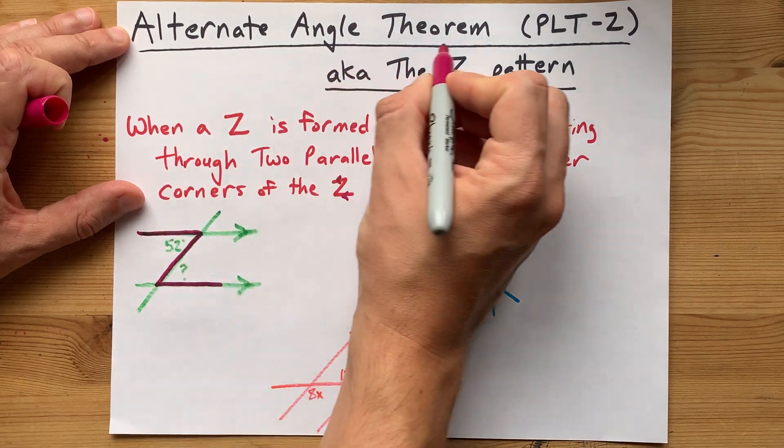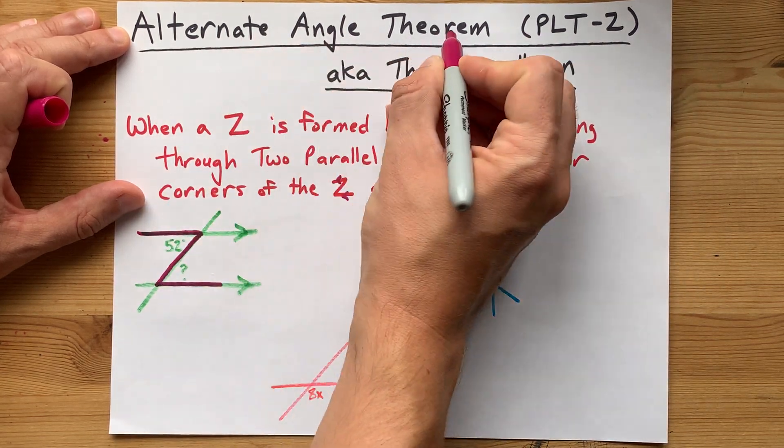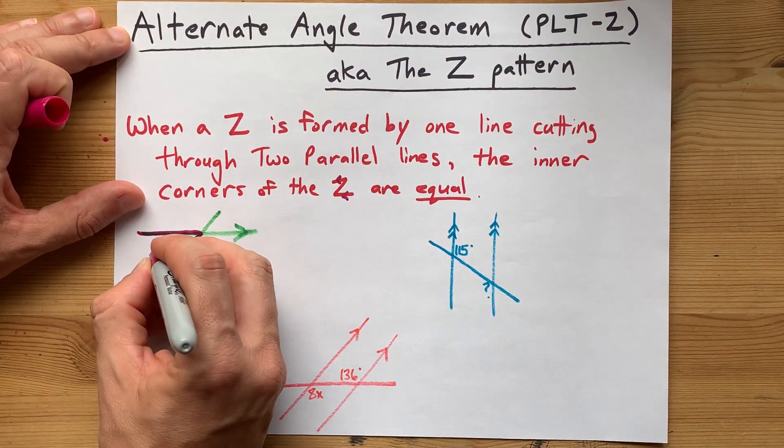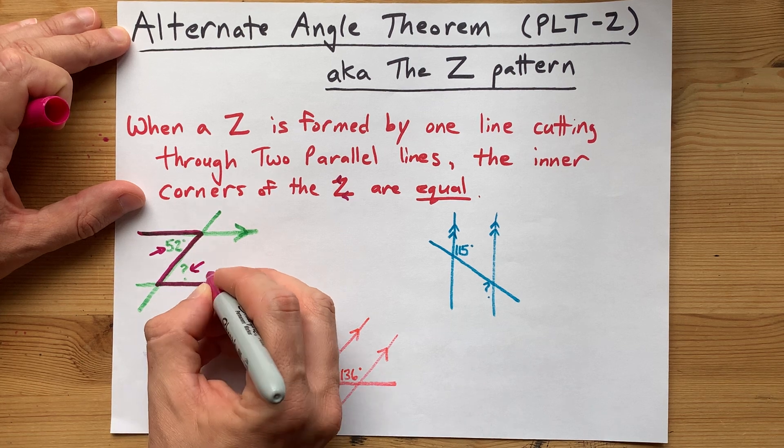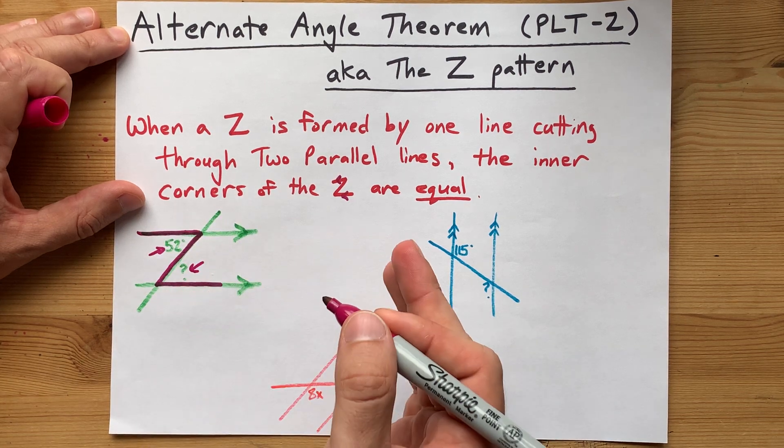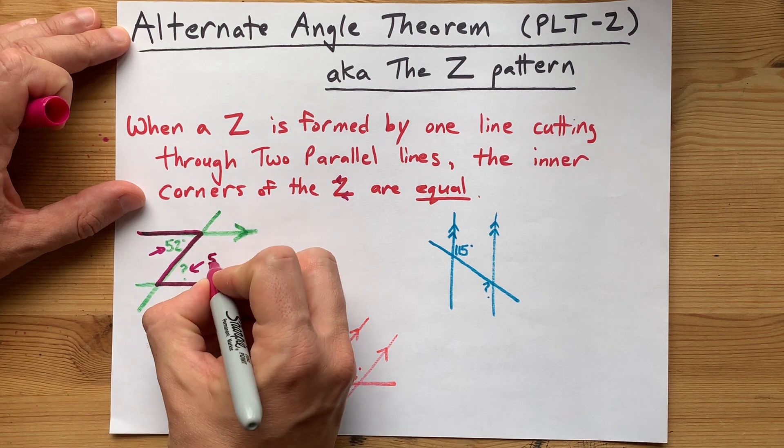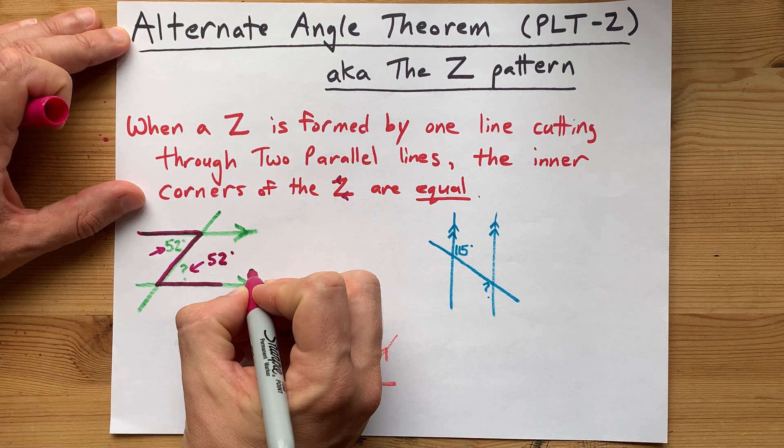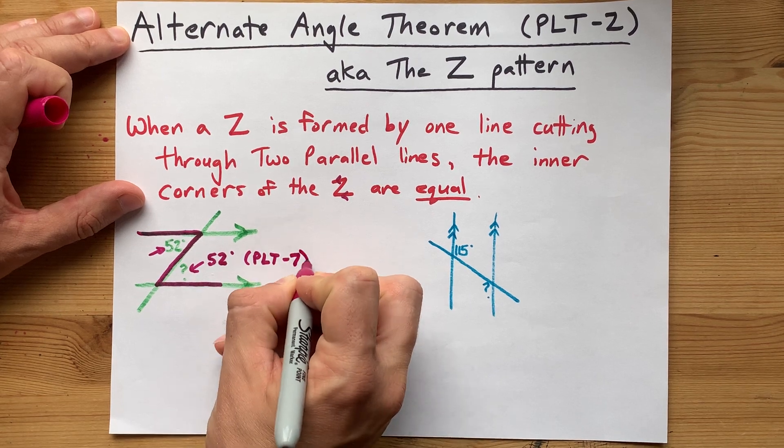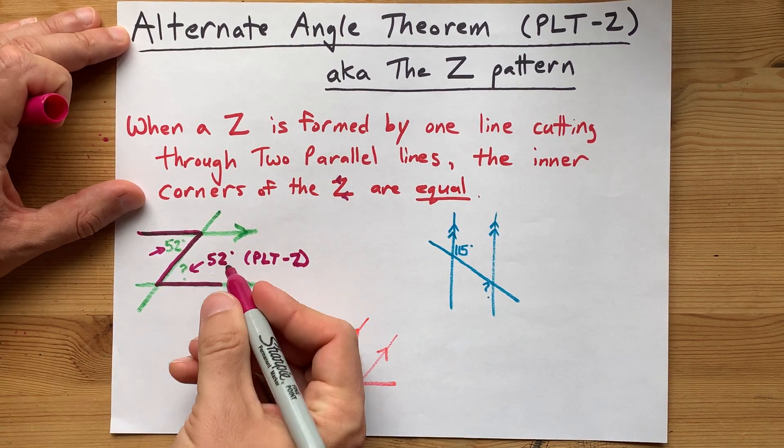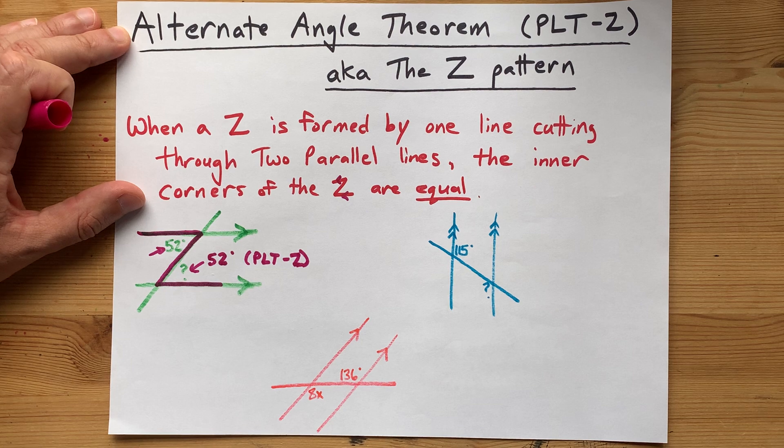What the PLT-Z, or Alternate Angle Theorem, says is that the inner corners of that Z pattern are equal-sized angles. This 52 degrees is the same as this 52 degrees. And you just have to say PLT-Z so that everyone knows how you figured out that that was 52 degrees.